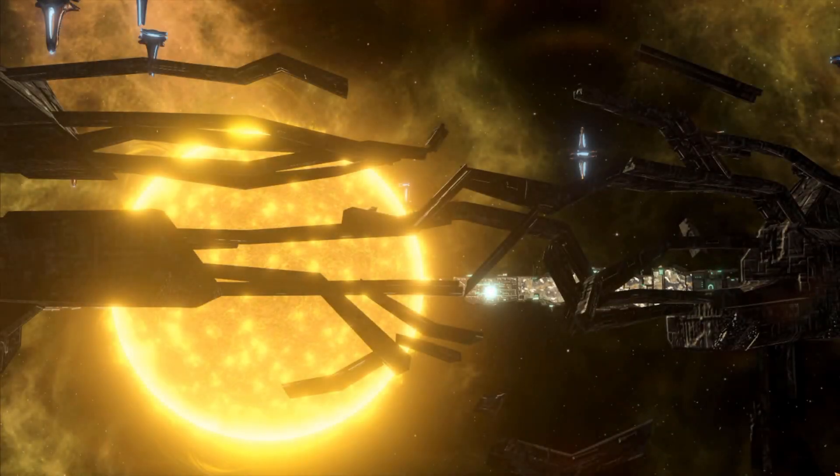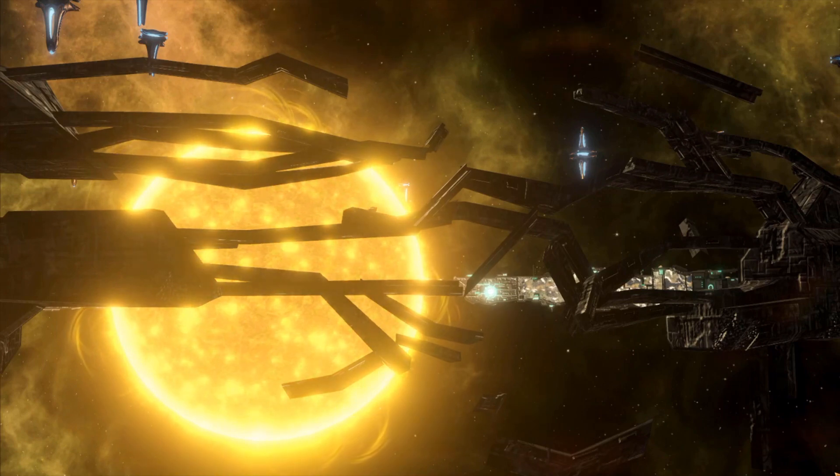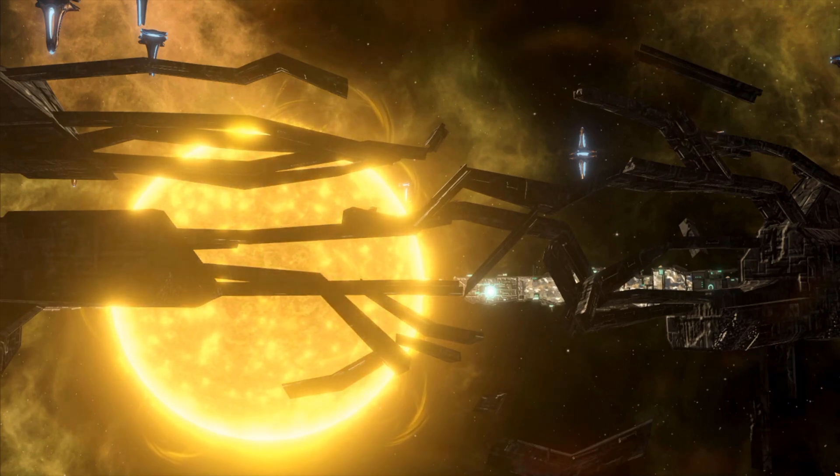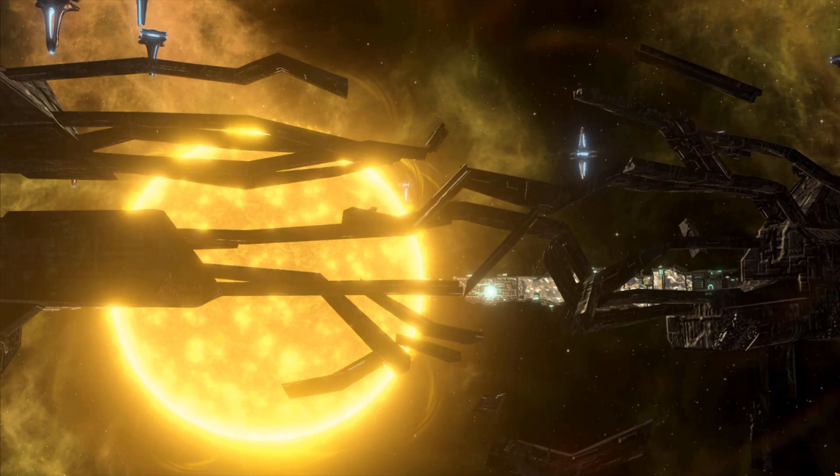Destroyers are the second ship you gain access to in Stellaris, and they are in many ways just a bigger, slower version of a corvette. Unlike corvettes, destroyers don't have the same absurd level of evasion. Corvettes are one of the strongest ships in game, and destroyers might be the weakest ship in Stellaris, but they have their place.